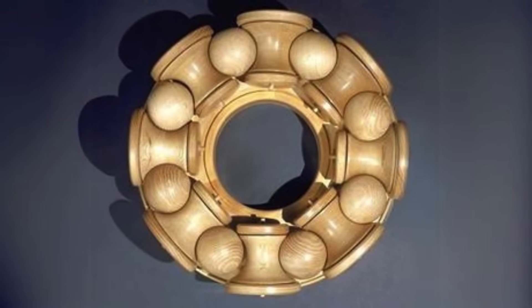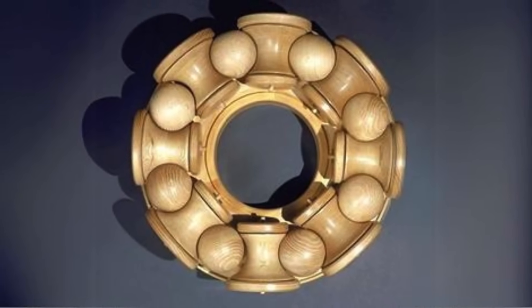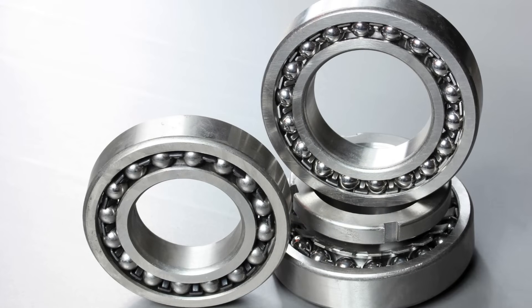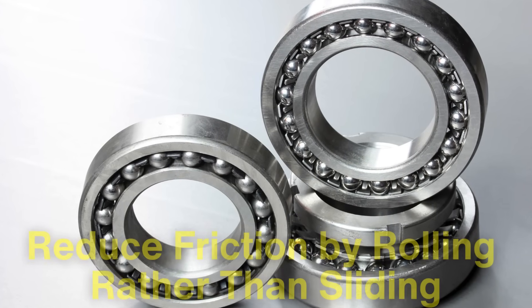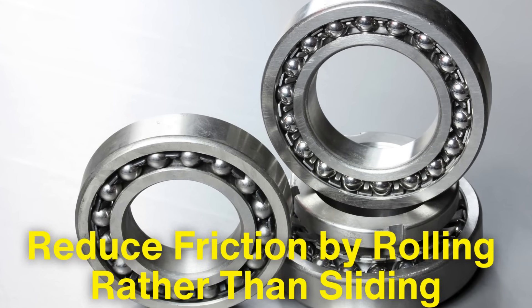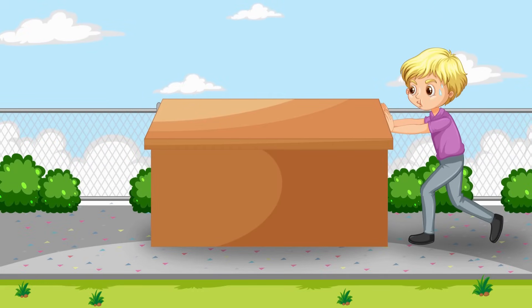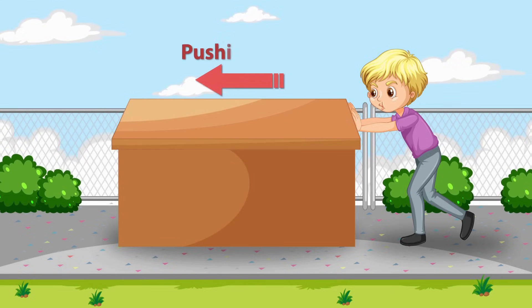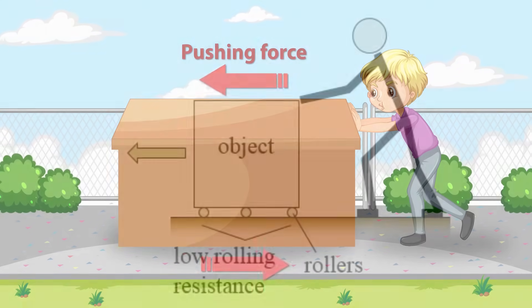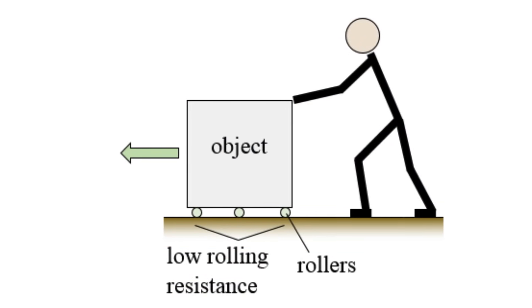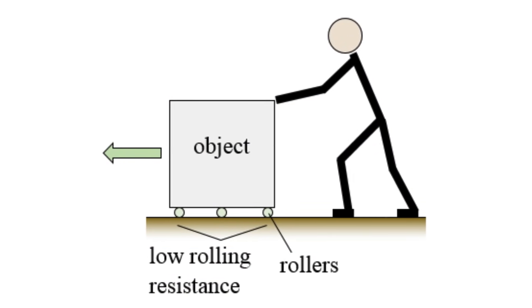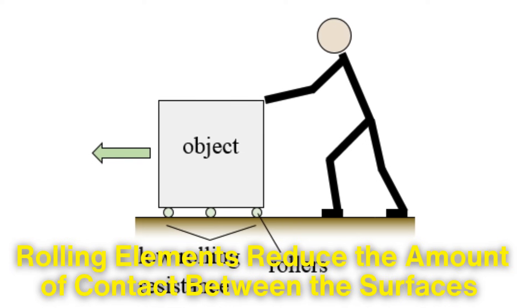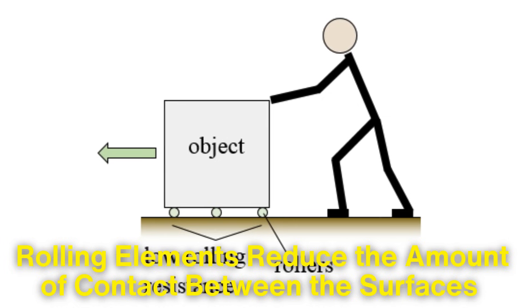Before we delve into how ball bearings are made, it's essential to understand their purpose and how they work. The basic idea behind ball bearings is pretty simple. They reduce friction by rolling rather than sliding. Imagine pushing a heavy object across a flat surface. There's resistance because of the friction between the two surfaces. Now, place some marbles or small round objects under the load, and suddenly, it becomes much easier to move because the rolling elements reduce the amount of contact between the surfaces.